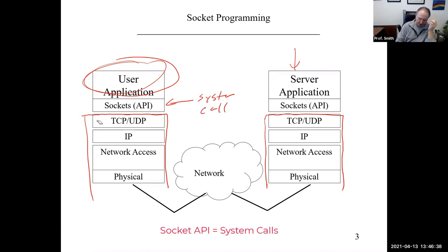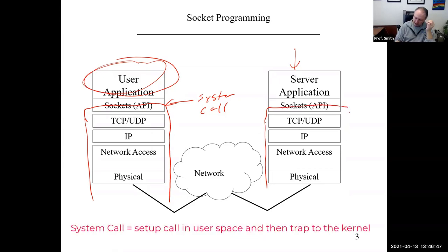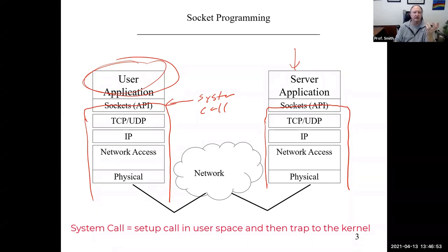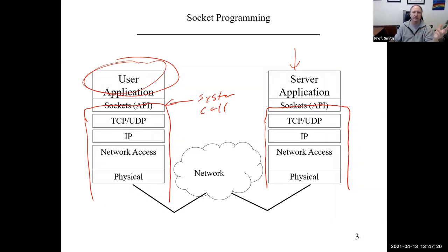Part of the system call is in user space and part is in kernel space. Its goal is for you to set it up with whatever parameters it needs, then trap to the kernel, let the kernel execute the function, and come back. There's no magic here — the socket API is just a set of functions that are, honestly, horribly written. But we have to live with them because that's what we have.